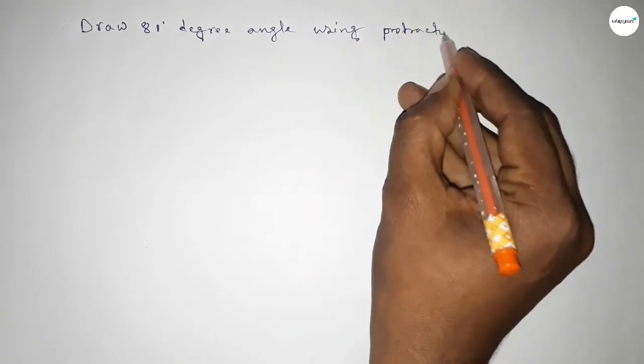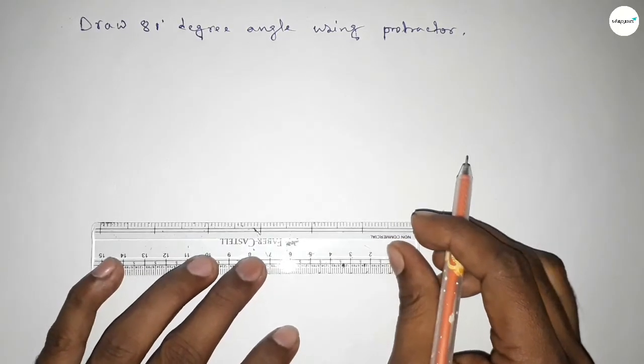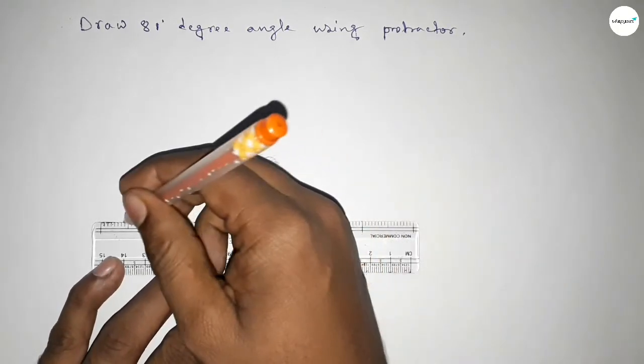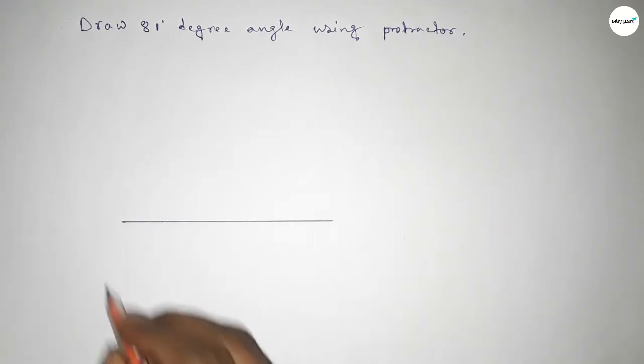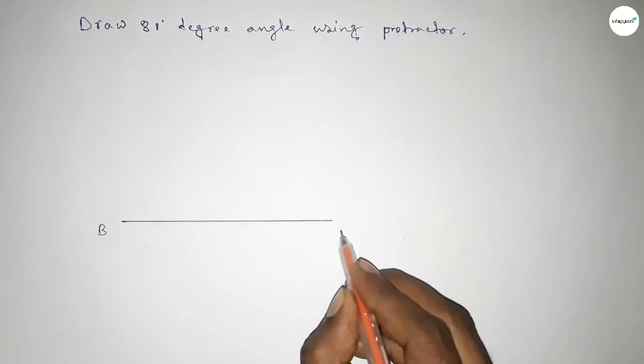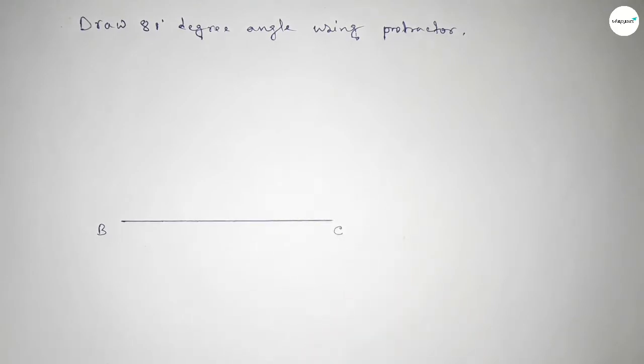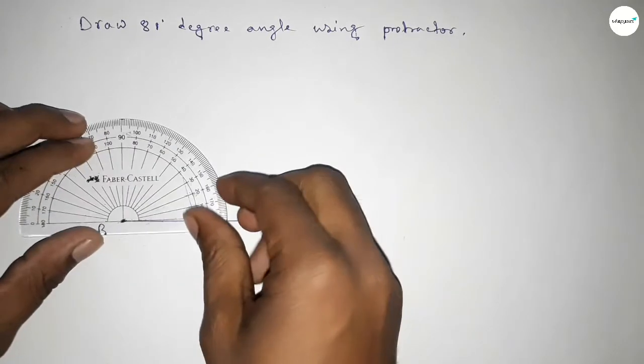So, constructing an 81-degree angle, let's start the video. First of all, we have to draw here a straight line of any length. Next, taking here point B and here point C. Now putting the protractor on the point B perfectly.